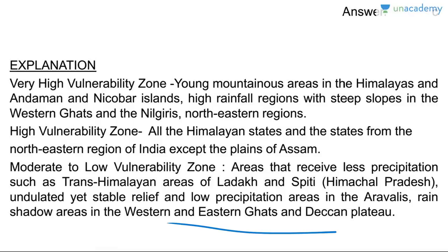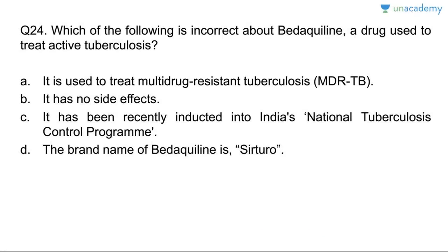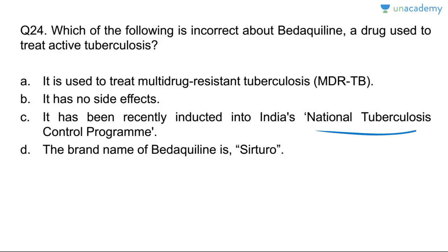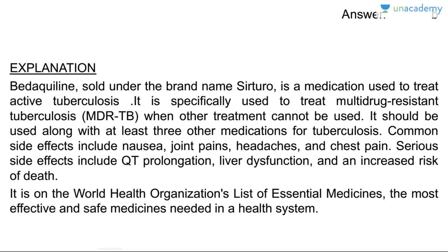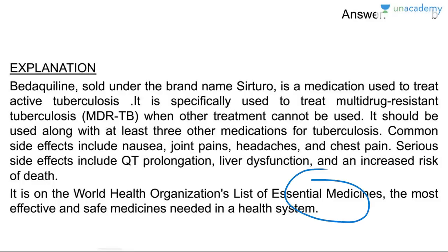Question on Bedaquiline, a drug used to treat active TB. It is used to treat MDR-TB — correct. It has no side effects — wrong; as a doctor, every drug has side effects. The brand name Sirturo — correct. It is included in India's National Tuberculosis Control Program — correct. Answer is B. Bedaquiline is used for multi-drug resistant TB where other drugs are not functioning, used alongside at least three other medications. Side effects include nausea, joint pain, headaches, chest pain, QT prolongation, and liver dysfunction.